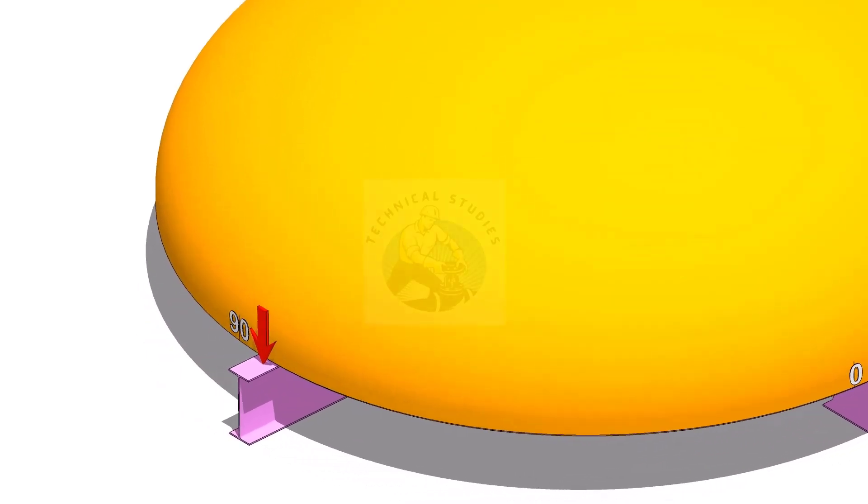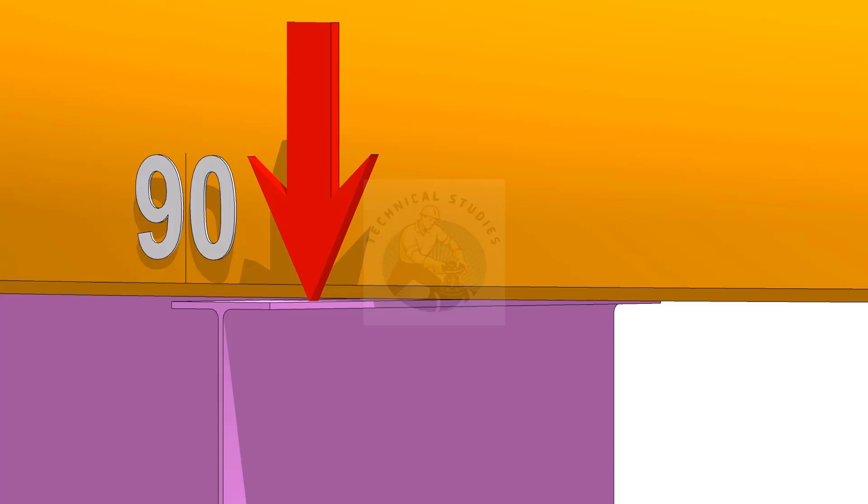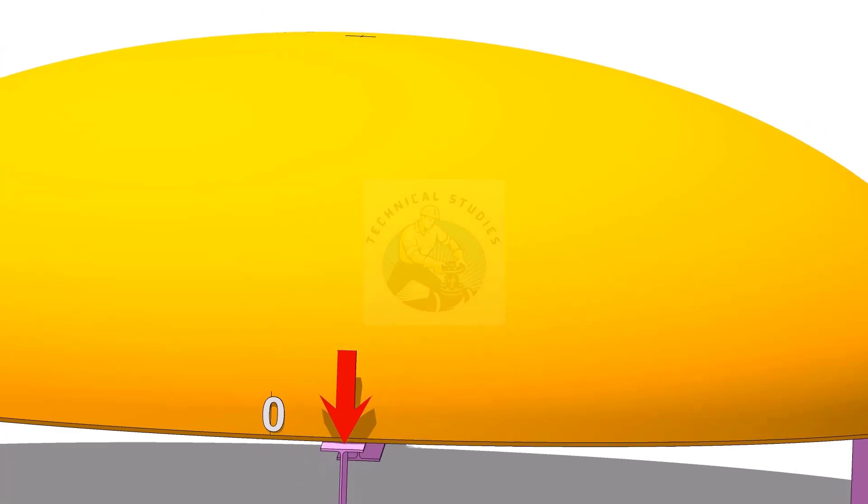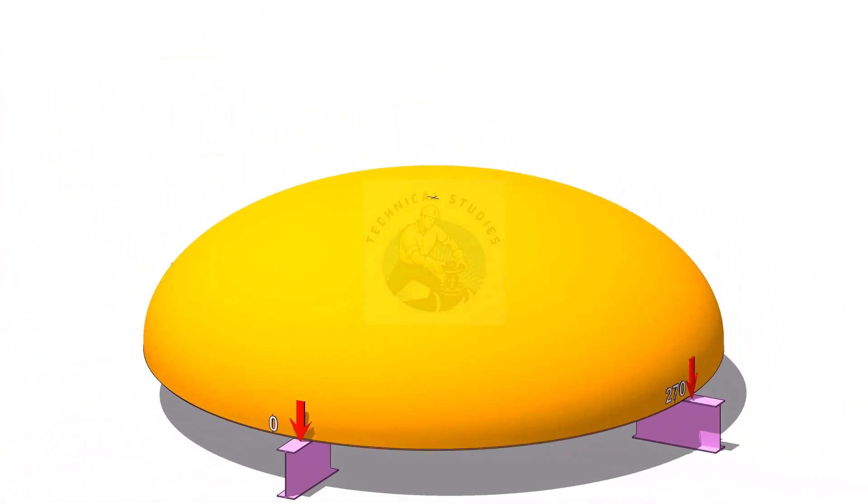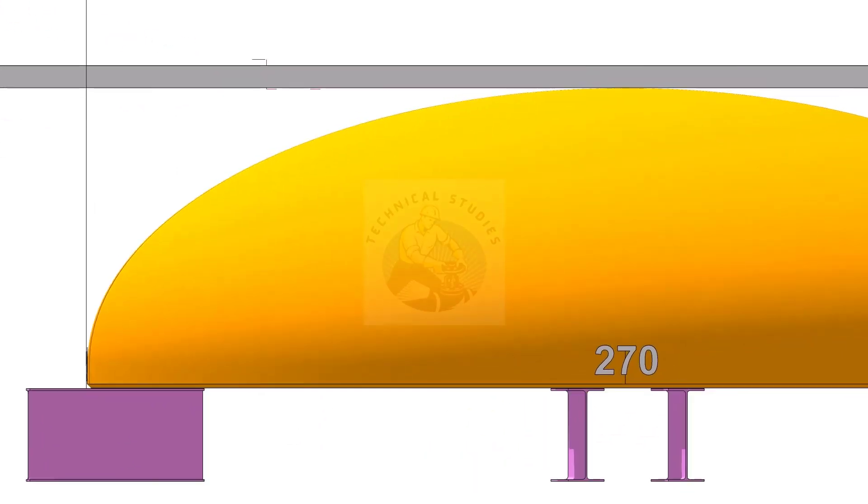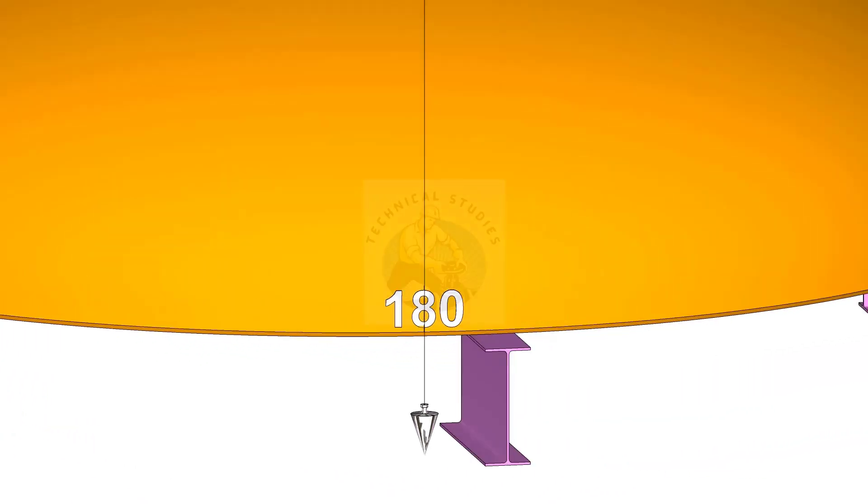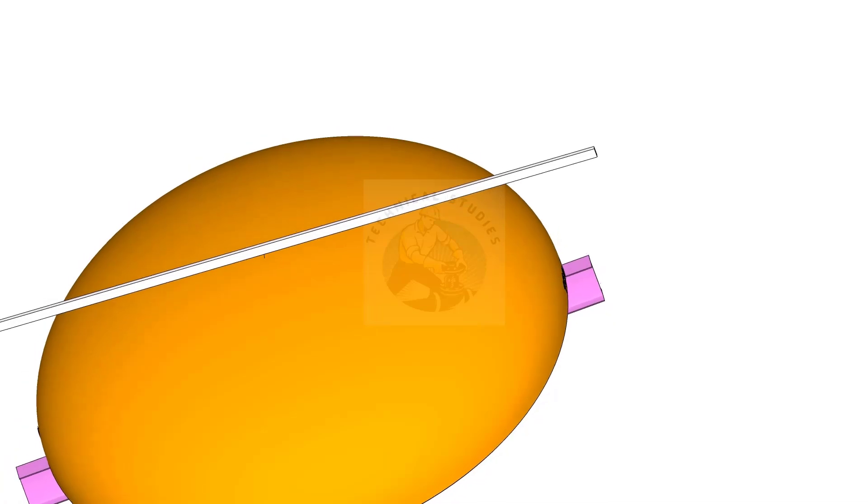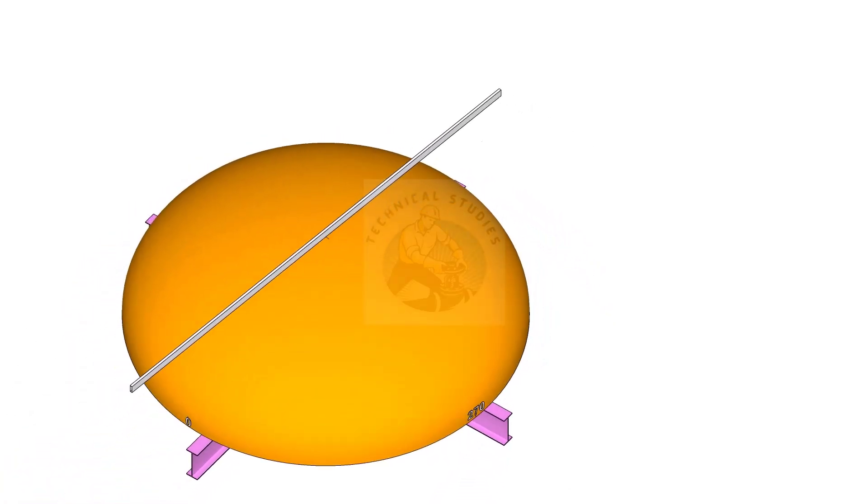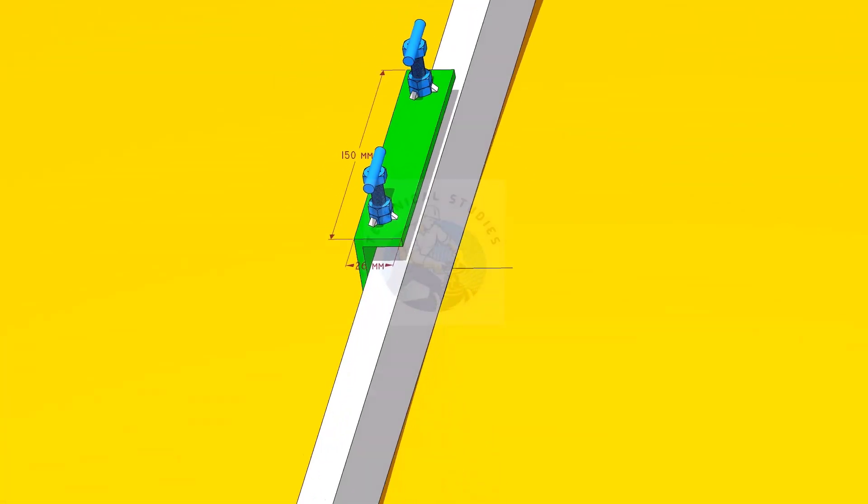Let us mark the center lines of the dish end. Put the dish end as shown and level it. Put a straight edge or an aluminum box on the top of the dish end as shown. Put plumb bobs on both ends of the box. Adjust the position of the box and fix it on the center of the dish end. You can make a simple fixture as shown to fix the box on its exact position.